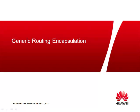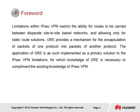We now take a look at Generic Routing Encapsulation, or GRE, for support of protocol encapsulation where encapsulation is not naturally supported. Limitations within IPSec VPN restrict the ability for routes to be carried between disparate site-to-site-based networks, allowing only for static route solutions. GRE provides a mechanism for the encapsulation of packets of one protocol into packets of another protocol, and is implemented as a primary solution to the IPSec VPN limitations.